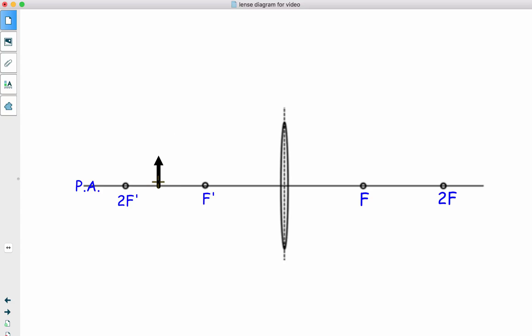Now we have our object placed between 2F prime and F prime. Parallel to the principal axis. Then it goes through the focal point. Through the focal point until you hit the lens. And out parallel.